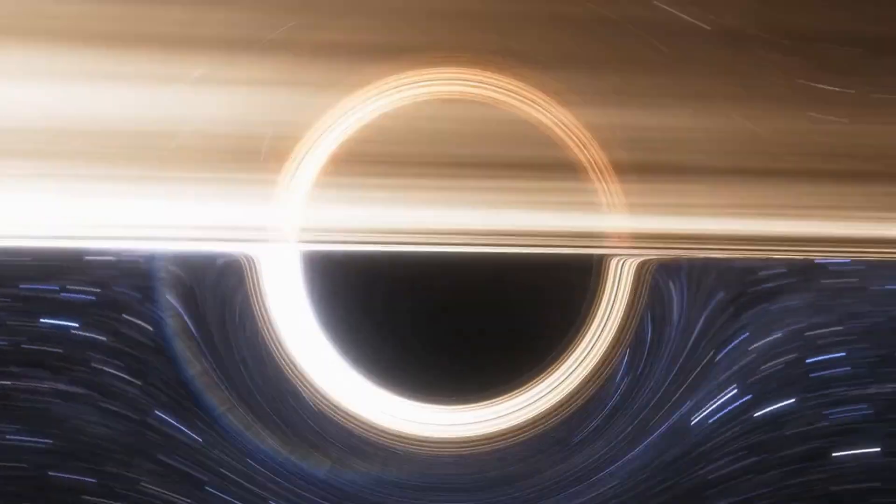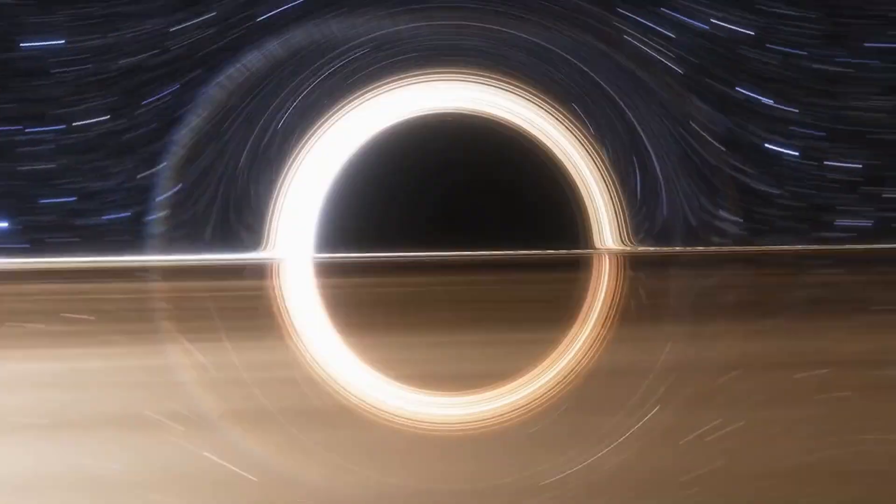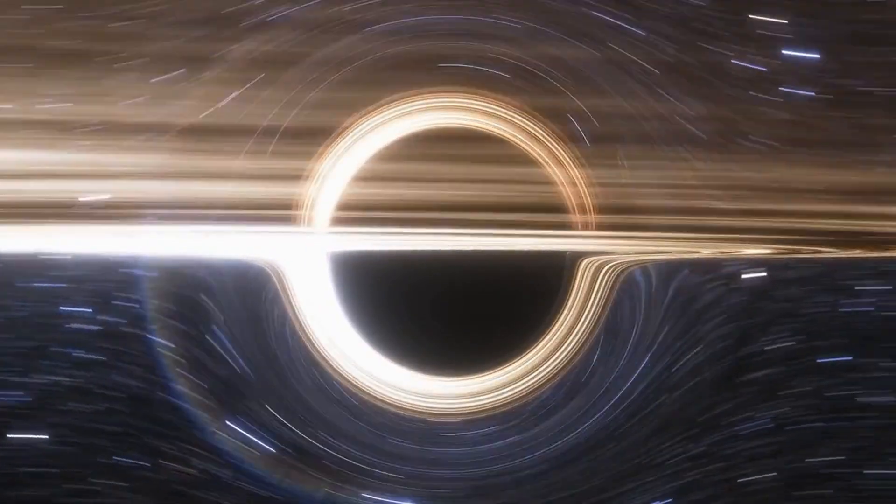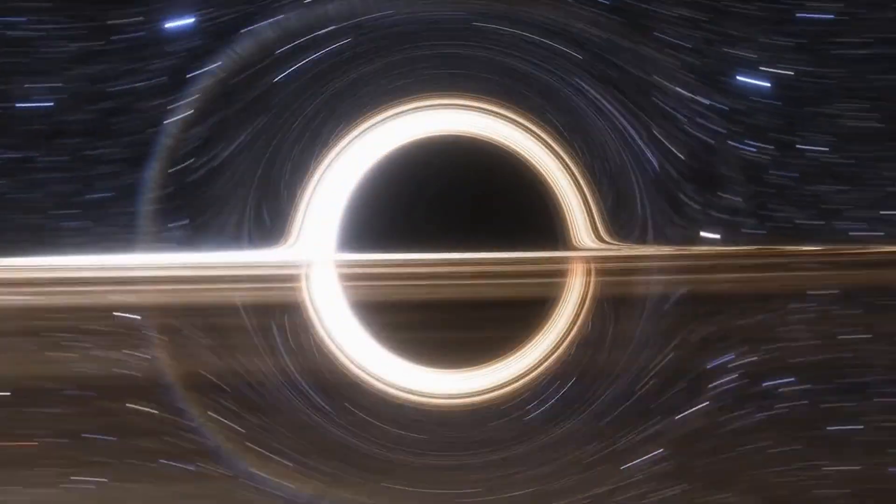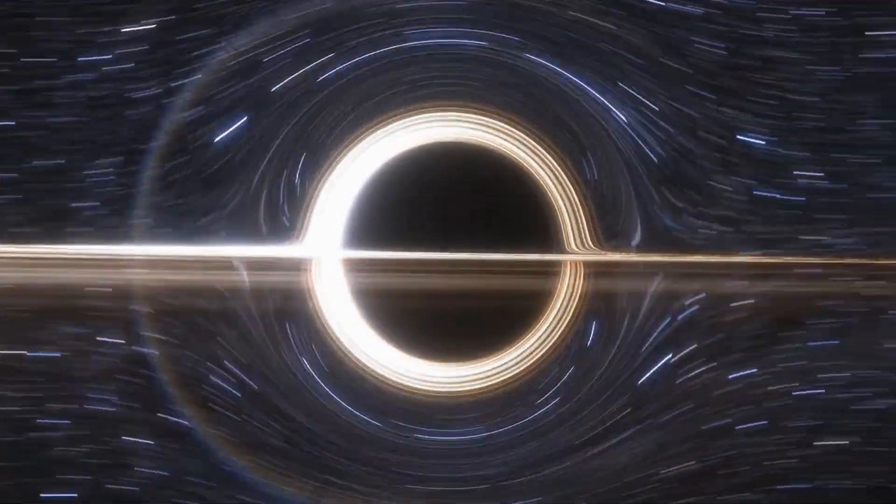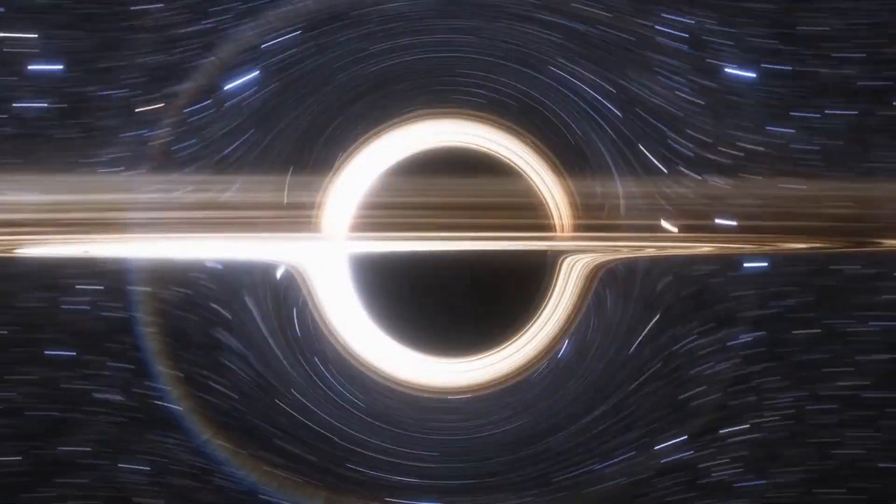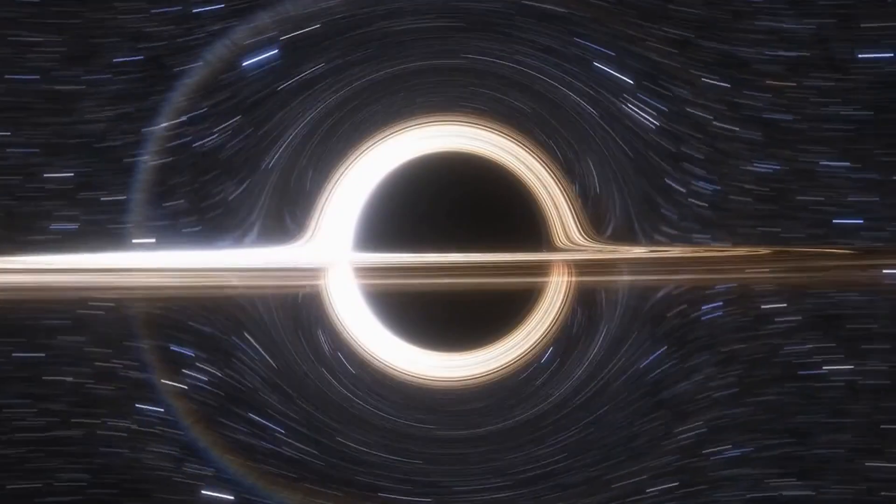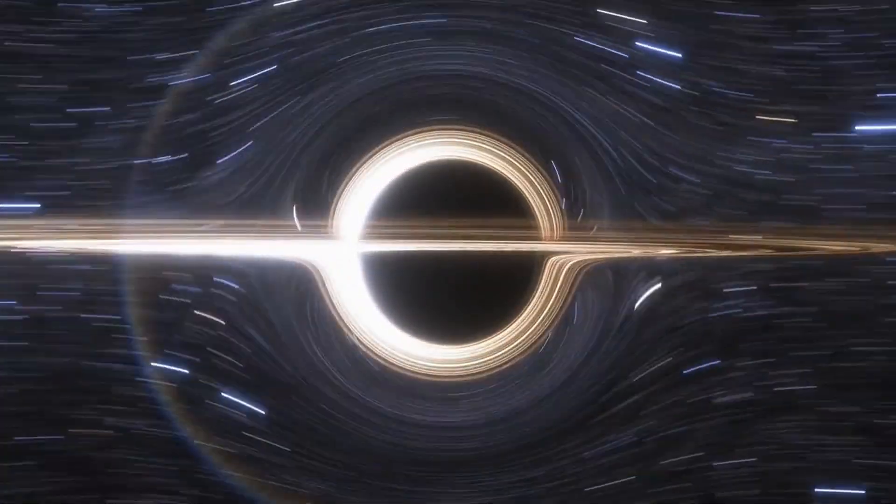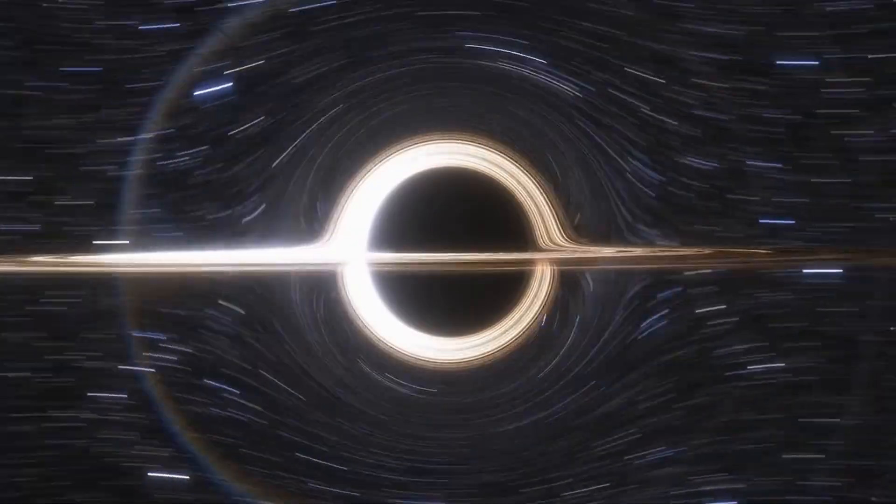Its diameter is 290,000 times that of the sun, with a mass approximately equal to 66 billion times the sun's mass. It is located in the constellation Canes Venatici. The black hole inside Ton 618 is the largest black hole observed by humans so far.